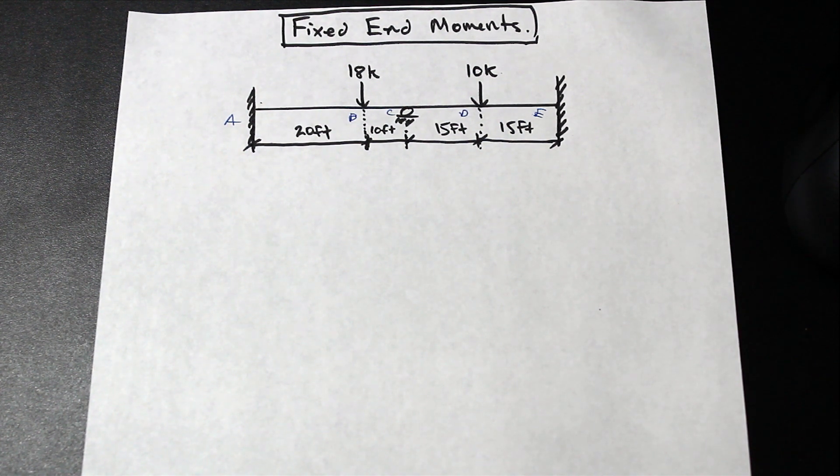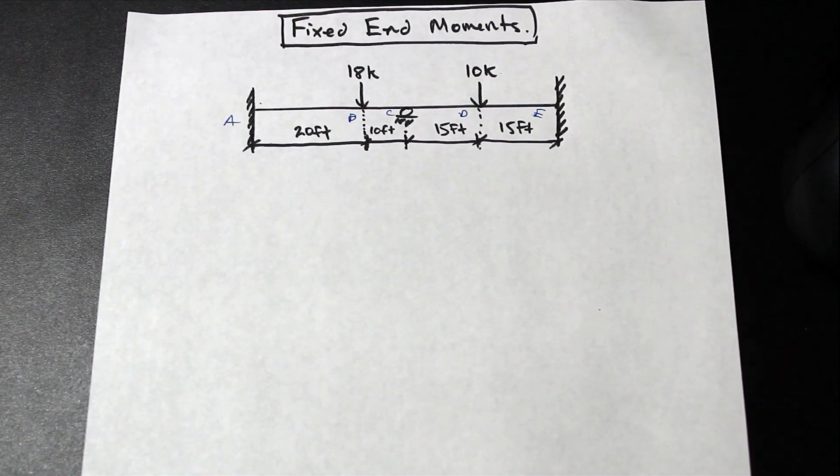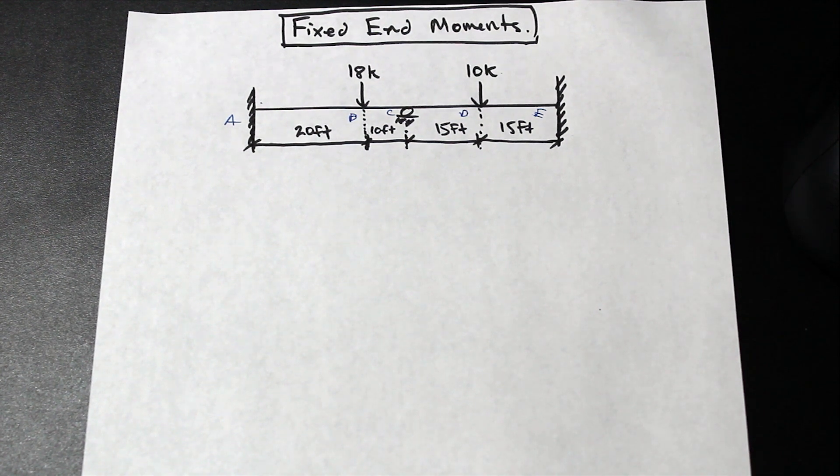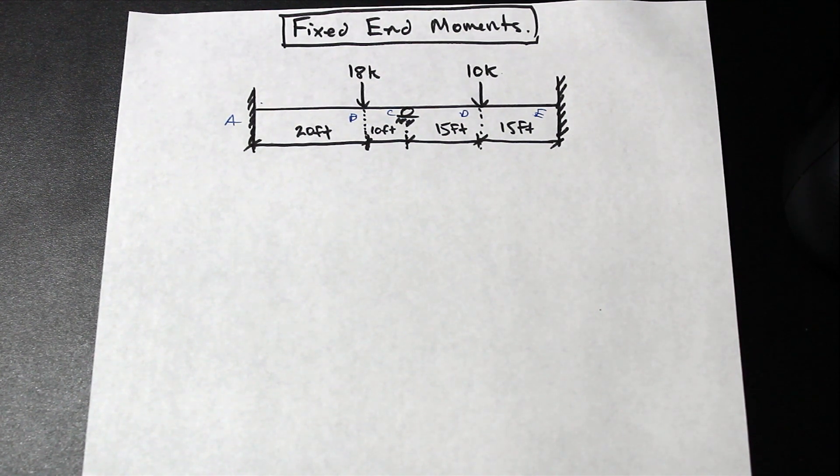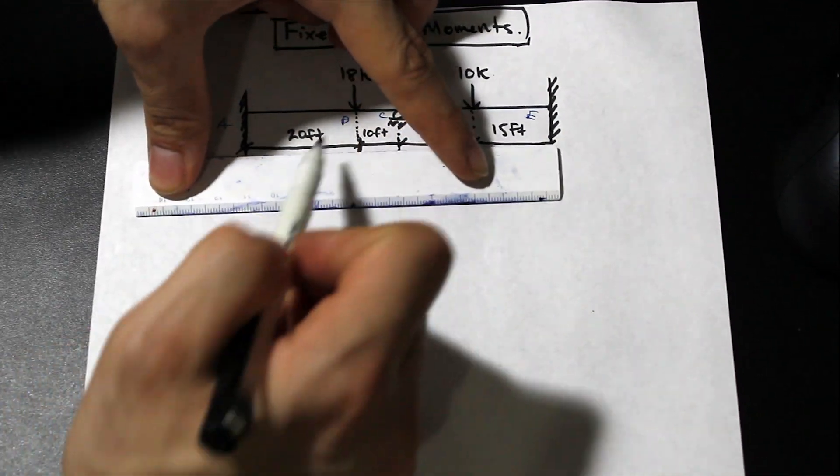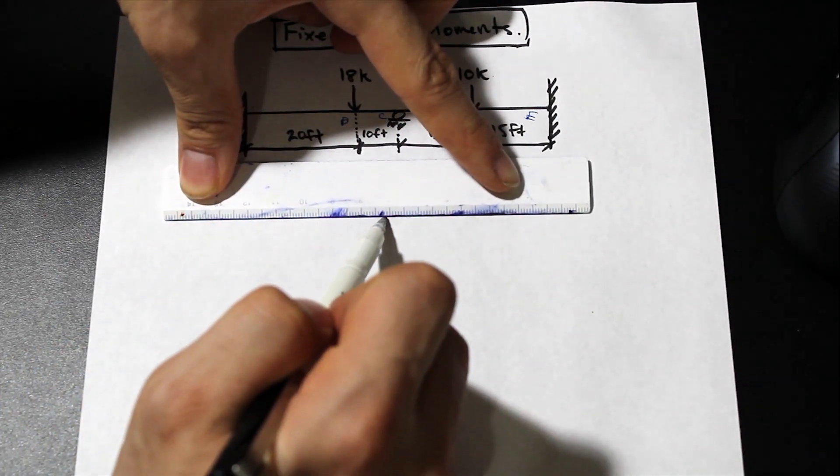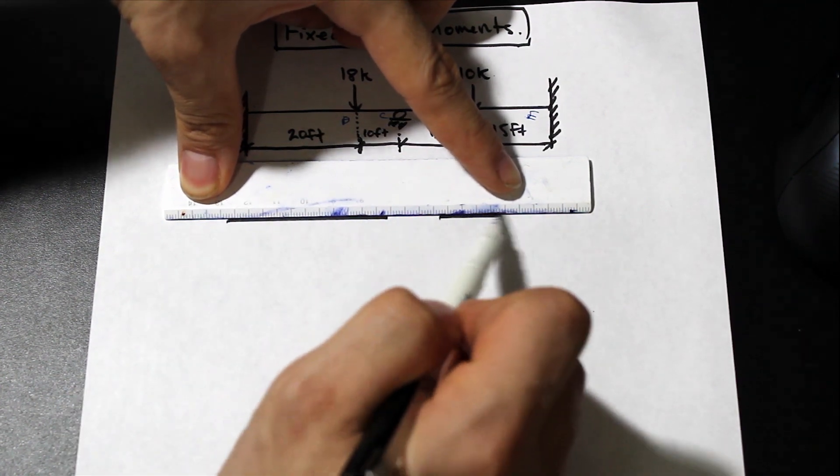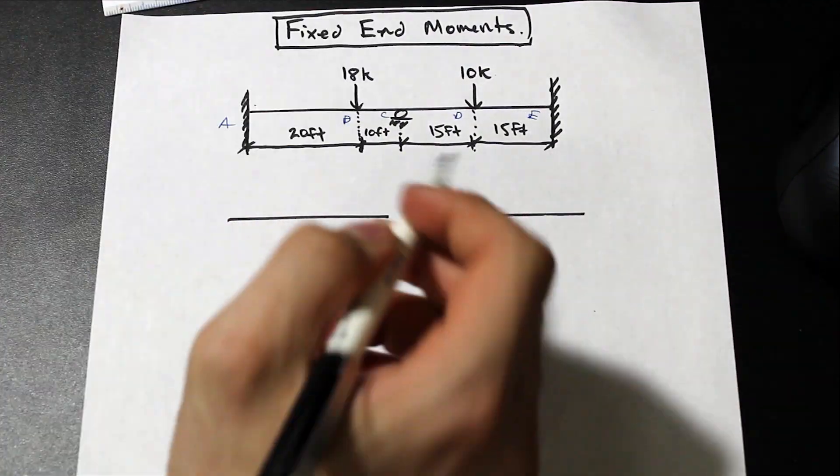We can use those moments in various structural analysis techniques in order to solve for other things. In a lot of these questions you will be asked to find the fixed end moments before you do anything or as part of a question, and you need to know how to find them. So the first step is we're going to take this beam and separate it into two fixed end sections.